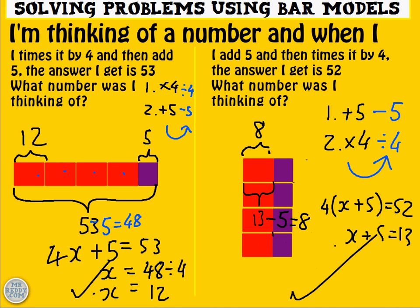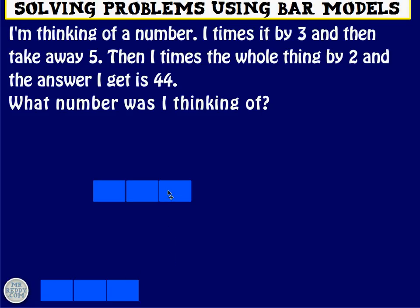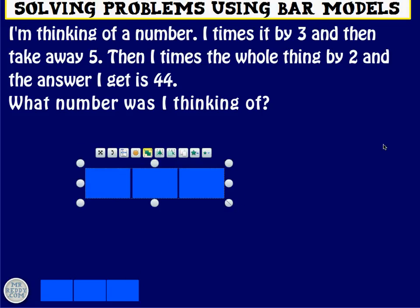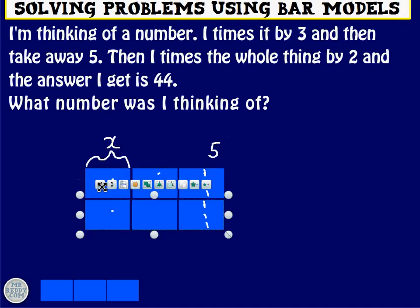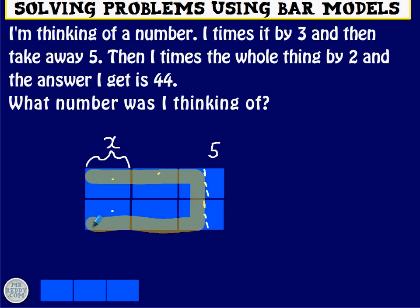Next one. And last one. Three-step problem. I'm thinking of a number, and I times it by 3. And then I take away 5. So let each of these blue boxes be x times it by 3. 1, 2, 3. And then take away 5. That bit is 5. Then double the whole thing. This is where the tricky part comes in. Double the whole lot. So we need to represent it like this. And it's this bit here that I'm about to highlight, up to here and down to here, that is 44. That bit is 44. Because remember, it's after we've taken away 5 that we double it.